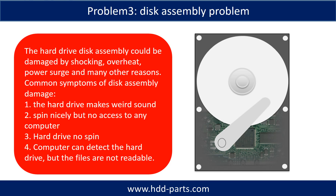Tips: if the storage is configured as mirrored hard drives, you can take the bad hard drive out, then put a same size or bigger hard drive into the bay, and the storage will mirror the data to the new hard drive automatically. If this trick doesn't work, that means the two mirrored hard drives are both damaged, or the storage was configured as RAID 0, meaning the two hard drives hold different data.